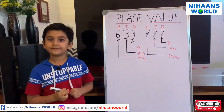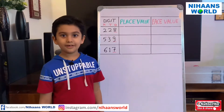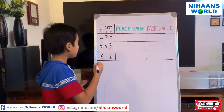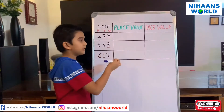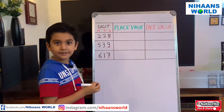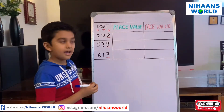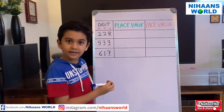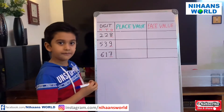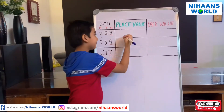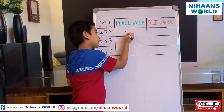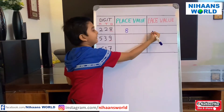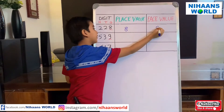8's place value is 800. Friends, now let us see these examples. So in 8, the place value and face value are both 8. Let us write it: 8 and 8.